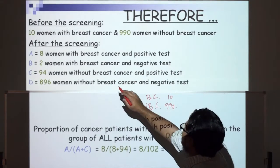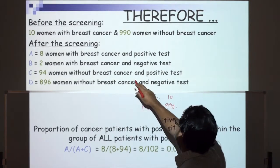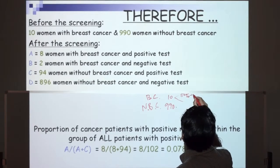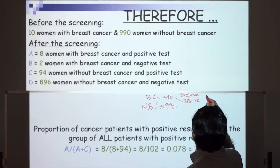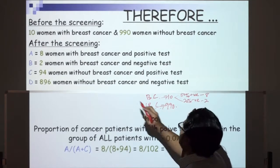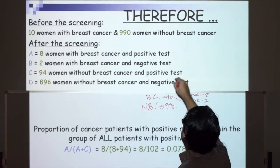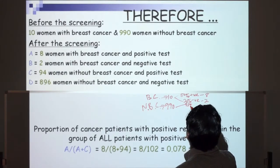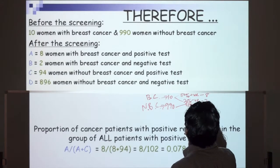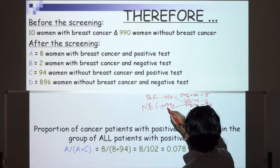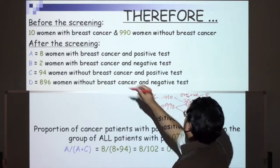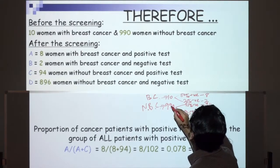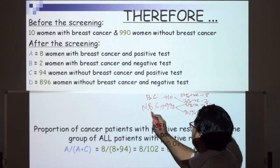After the screening: 8 women with breast cancer get a positive test, 2 women with breast cancer get a negative test — 80% times 10 is 8 people, and 20% times 10 is 2 people. For women without breast cancer, 9.5% times 990 gives 94 women with a positive test, and 90.5% times 990 gives 896 women with a negative test and no breast cancer.